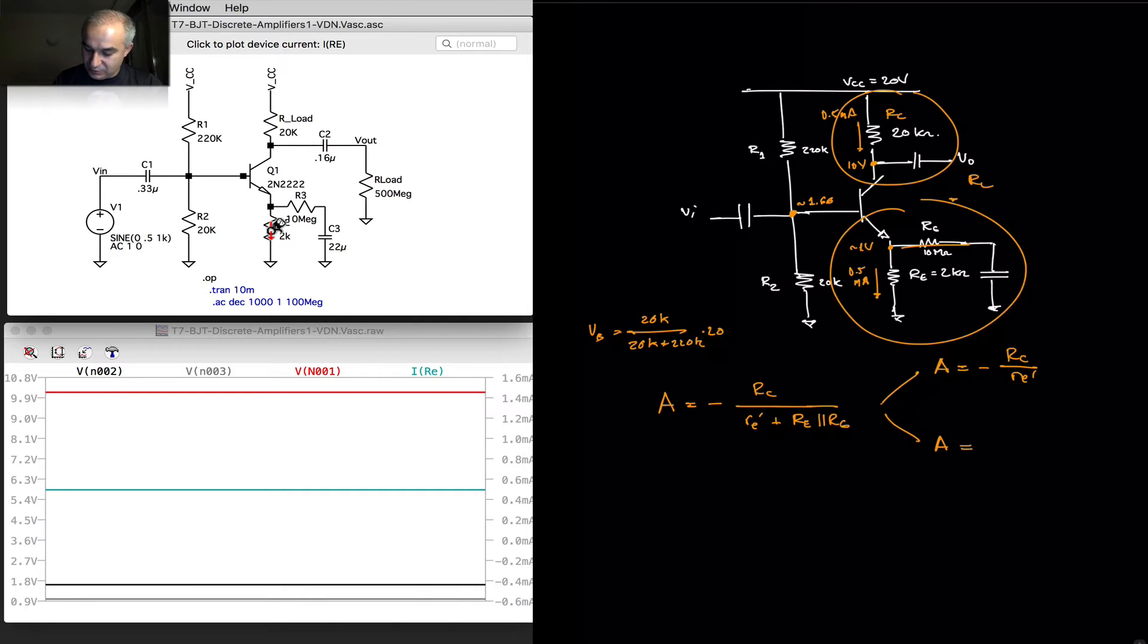Or maximum temperature stability, where you are swamping Re. Remember this is VT over ICQ, approximately, so 25 millivolts at room temperature, over 0.5 milliamps, 50 ohms, but it changes with temperature, because VT changes 2 millivolts per centigrade. And so, we typically want to swamp it by having an Re that is much larger, so we have RC divided by Re' plus, if we make it open, if we open this, Re, which will be approximately equal to Re.